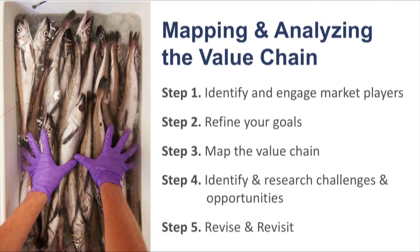Now that you know the different parts of the value chain, we will walk you through five steps to map and analyze a specific value chain. This process usually takes quite a bit of time and requires input and participation from a wide range of stakeholders. It can be carried out through a series of conversations, a large group work session, or by the coordinator who then checks in with other stakeholders. You want to ensure that your target group — that is the people you want most to benefit from this value chain work — are involved in the process so that you can understand the specific challenges they face in participating in or attempting to participate in the market. While we are representing this as a linear process, in reality there will be quite a bit of jumping back and forth among the steps. Also, this is not a process you carry out just once and put aside. You will constantly be revisiting these steps as you develop your market opportunity.